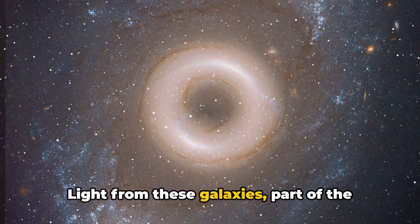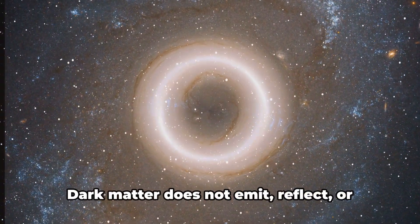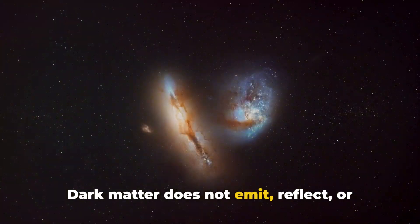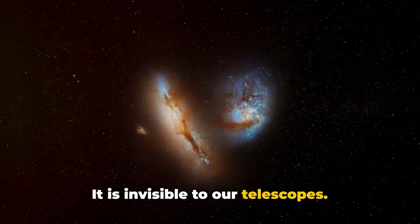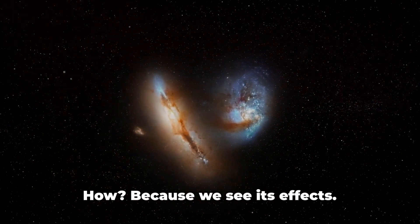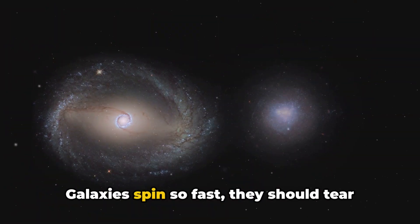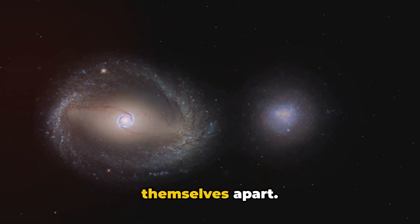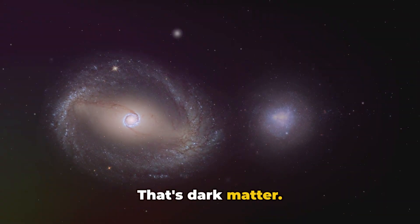Light from these galaxies, part of the universe's early light, offers clues to the dark matter puzzle. Dark matter does not emit, reflect, or absorb light. It is invisible to our telescopes. But we know it's there. How? Because we see its effects. Galaxies spin so fast they should tear themselves apart, but they don't. Something unseen holds them together. That's dark matter.